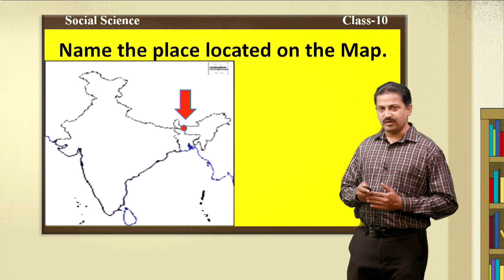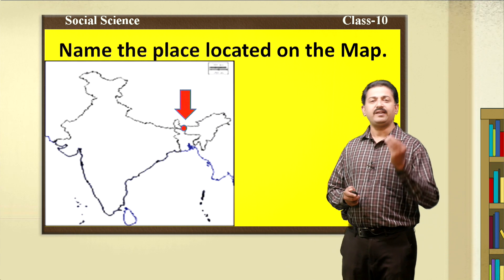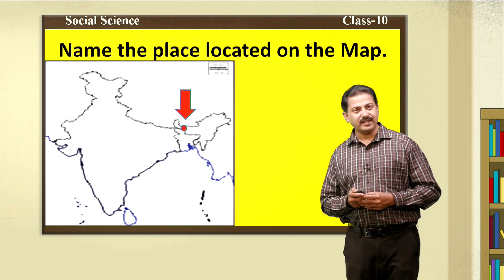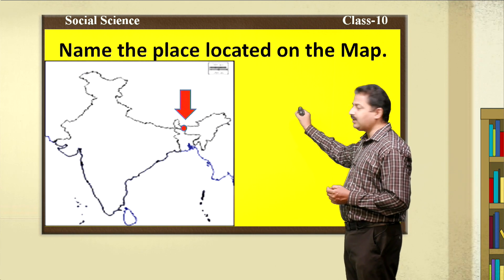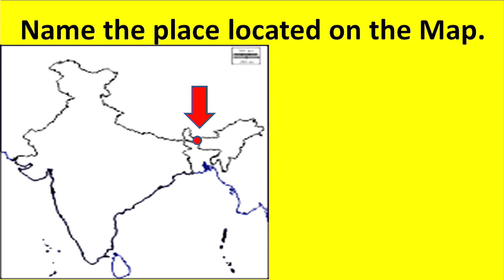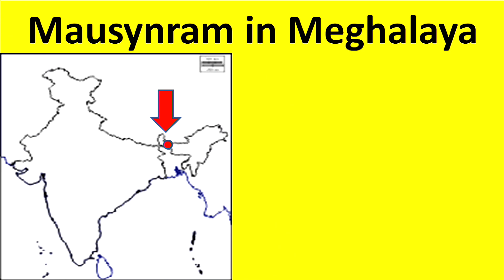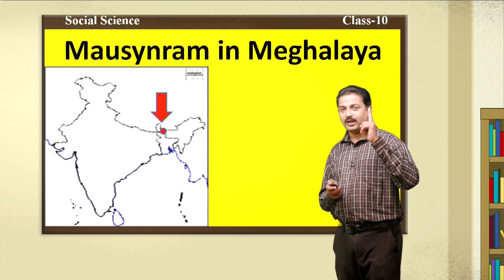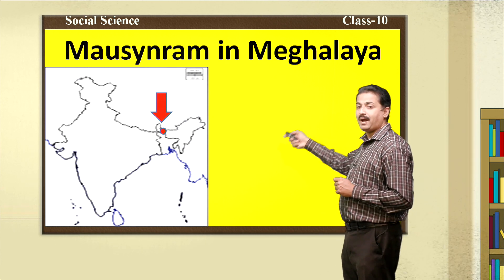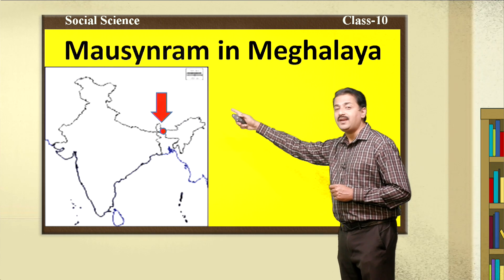Dear students, before I take you to the lesson, let me conduct a small activity. Here on the map of India, I have located a particular place — name the place located on the map. Most of you have answered correctly. The name of the place is Mawsynram in Meghalaya. Why is Mawsynram famous? I will tell you in this lesson. The located place on this map of India is Mawsynram in Meghalaya.